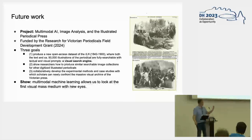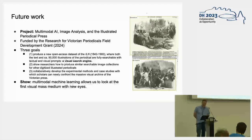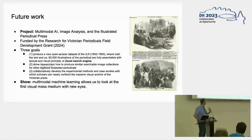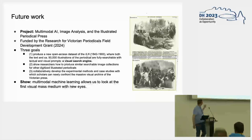For future work, this is a project continuing under the title Multimodal AI Image Analysis and the Illustrated Periodical Press, very fortunately funded by the Research Society for Victorian Periodicals. What we hope to do is produce a new open access dataset of the Illustrated London News where both the text and the 90,000 illustrations of the periodical are fully searchable — not only with textual but also with visual prompts — essentially a visual search engine. We also want to show that researchers can use our pipeline to produce similar search engines for other periodicals currently online, for example through the Internet Archive. Finally, with these experimental methods and case studies we hope to provide a new view of the visual archive of the Victorian press.